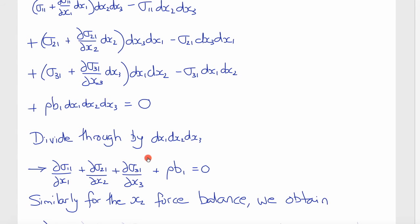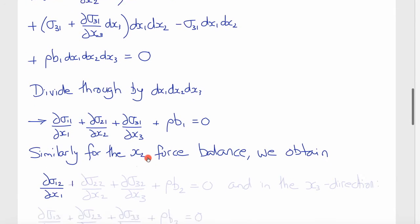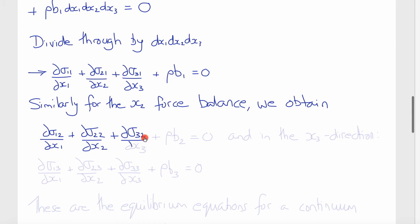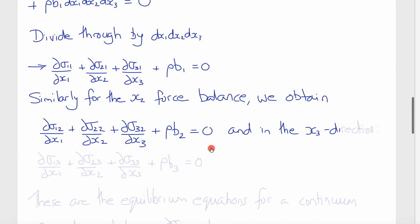And we can similarly do the same thing in the other two directions and get analogous expressions. ∂σ12/∂x1 plus ∂σ22/∂x2 plus ∂σ32/∂x3 plus ρ times b2 equals 0, so that's the x2 force balance. And finally, in the x3 direction, we'll get ∂σ13/∂x1 plus ∂σ23/∂x2 plus ∂σ33/∂x3. So these are the three force balance equations for a material continuum in equilibrium. It's the balance of the surface and the body forces.